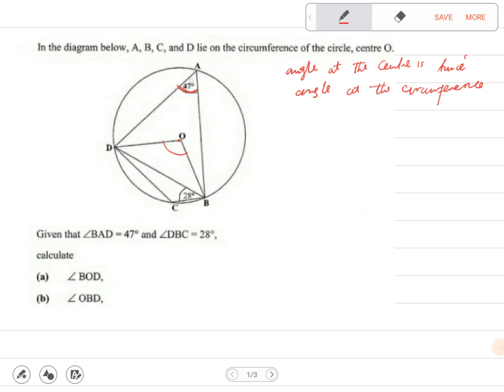From here, this angle is twice that angle. That angle is 2 times angle BAD. This would be 2 times 47 degrees, which gives us 94 degrees. Now find angle OBD - this angle here.